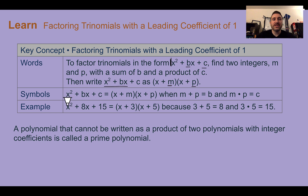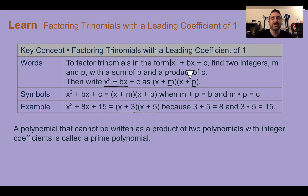For example, if we had x squared plus 8x plus 15, I could find two numbers — 3 and 5 — they multiply to get 15 and add together to get 8. So my factors would be x plus 3 and x plus 5. If you cannot find any integers that multiply to c and add to b, that's what we call a prime polynomial, meaning we cannot factor it.